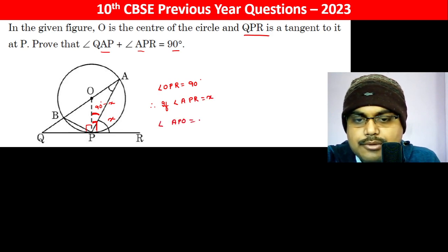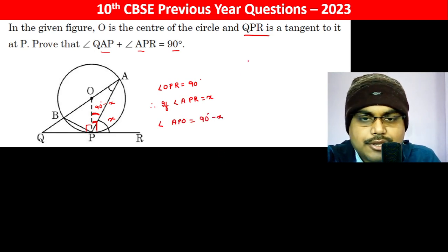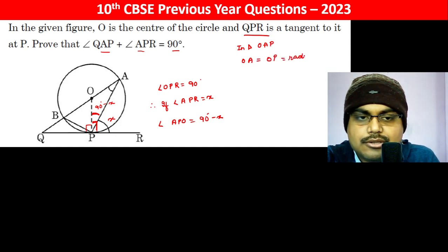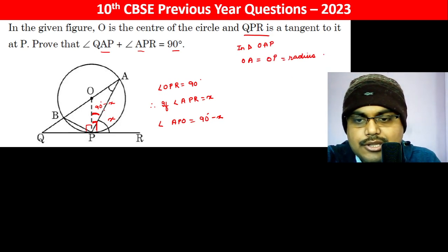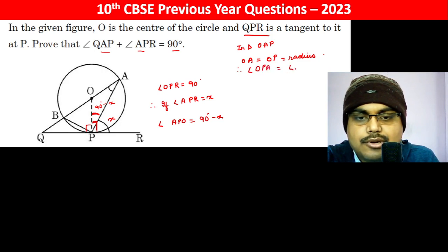Now in triangle OAP, we can see that OA is equal to OP, which is the radius of the circle. This makes it an isosceles triangle, therefore angle OPA should be equal to angle OAP.